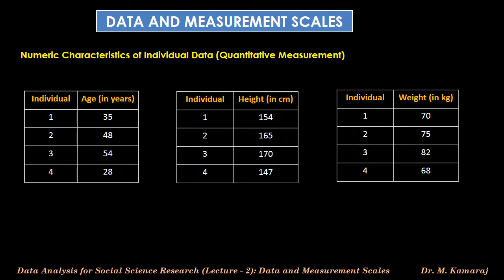On the other hand, numerical characteristics of individuals are capable of quantitative measurement. For example, age, height, weight, etc. Individual age measurement is possible from their date of birth. Respondents' ages in years are given in the table: 35, 48, 54, and 28. Similarly, individuals' height measurement is also possible through suitable scales; heights in centimeters are given as 154, 165, 170, and 147.